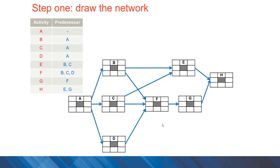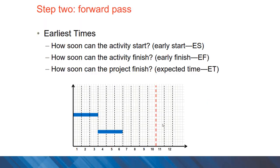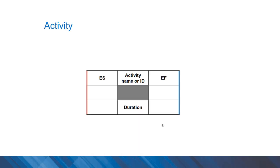There are different steps in network scheduling. The first one is to draw the network based on the logic given, and we have examples here. The second step is to calculate the forward pass and having earliest times. In the activity block, these values are populated on the top row of the block.